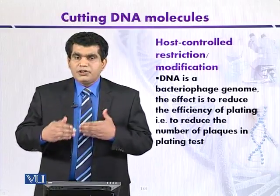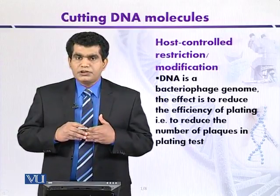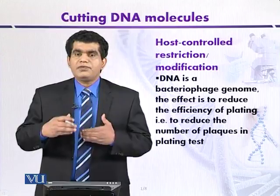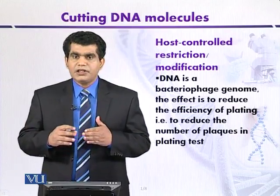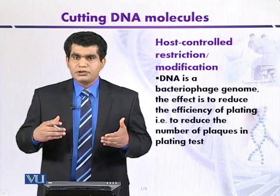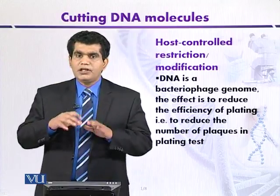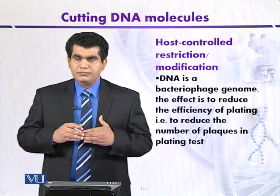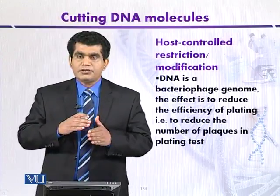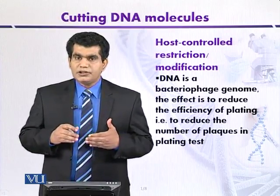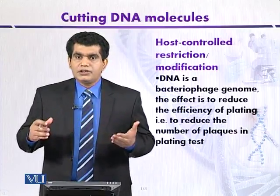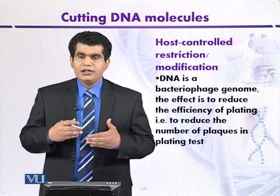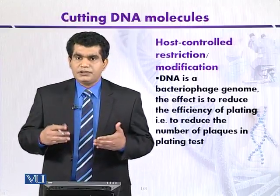When bacteriophages attack a particular host bacterium, we can monitor the replication of bacteria in terms of efficiency of plating. Efficiency of plating refers to the number of plaques produced during lysis. Plaques are the clear zones produced on a lawn of bacterial cells after cell lysis. When cells are grown on a solid medium, bacterial lawns are formed, and if lysis occurs, clear zones appear. We can count the number of plaques — if plaques are high in number, plating efficiency is also high.